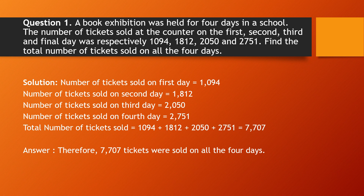Whenever we are asked to find the total, we need to add all the given values. The question tells us a book exhibition was held for 4 days in school, and the number of tickets sold on each day — 1094, 1812, 2050, and 2751 — must all be totalled.